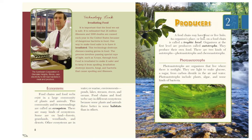Producers. A food chain may have four or five links. An organism's place or link on a food chain is called a trophic level. Organisms at the first level are producers called autotrophs — they produce their own food. There are two kinds of autotrophs: photoautotrophs and chemoautotrophs. Photoautotrophs are organisms that live where there is sunlight. They use light to make glucose, a sugar, from carbon dioxide in the air and water. Photoautotrophs include plants, algae, and some kinds of bacteria.